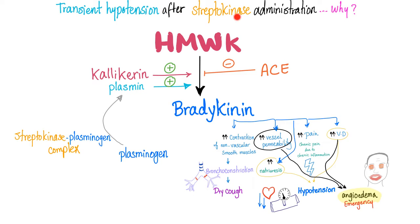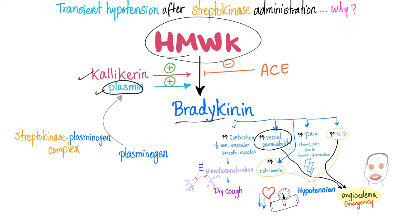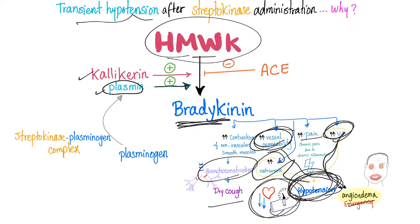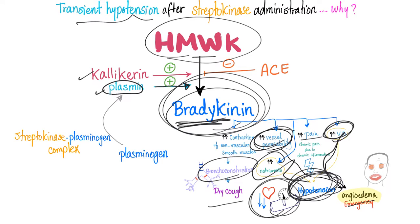Why do we get transient hypotension after streptokinase administration? Plasmin can activate high-molecular-weight kininogen into bradykinin. Bradykinin causes bronchoconstriction and dry cough, increased vessel permeability and angioedema, increased pain, and vasodilation with natriuresis leading to hypotension. So, transient hypotension after streptokinase administration is bradykinin-induced.